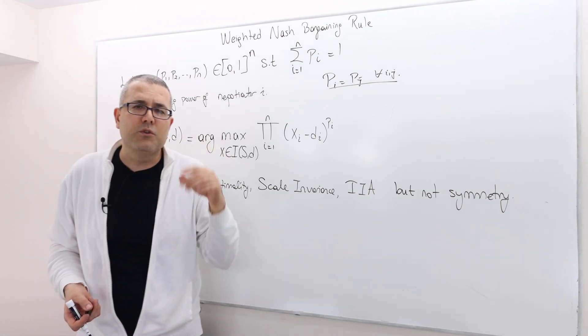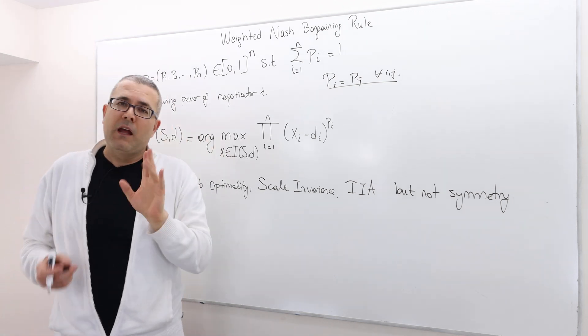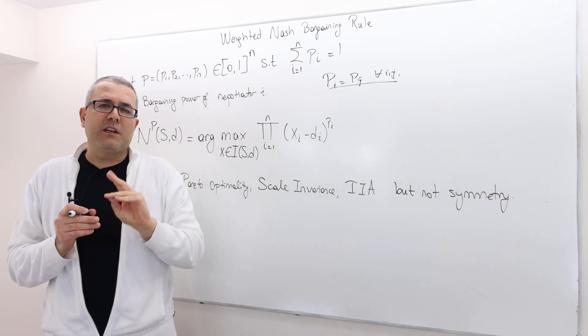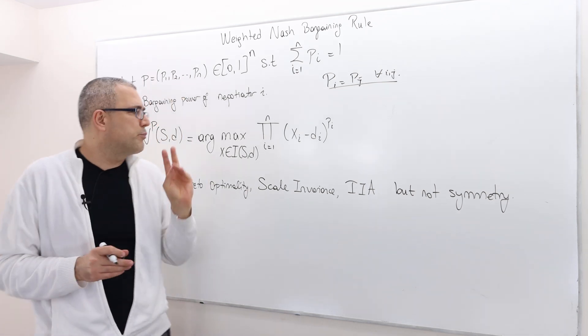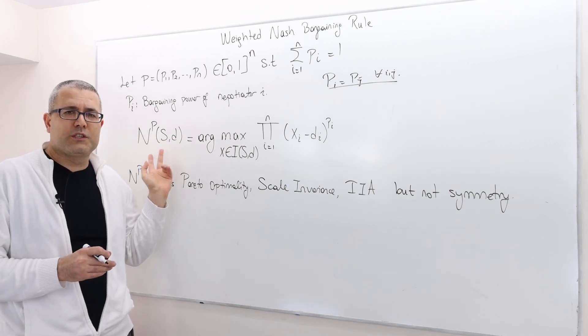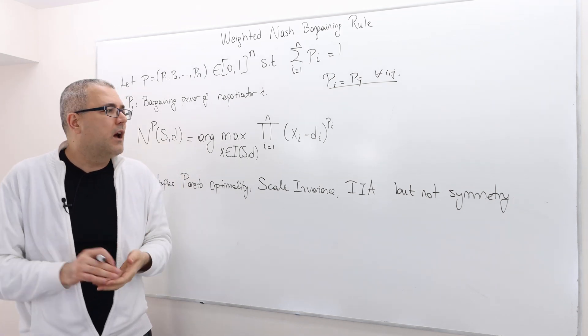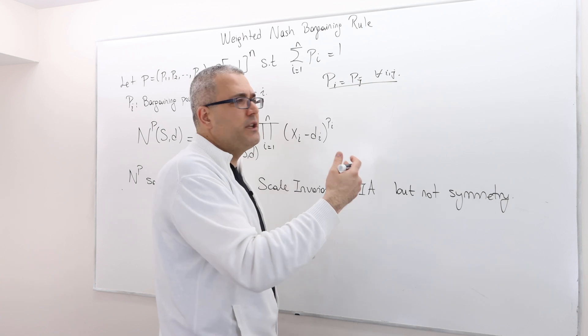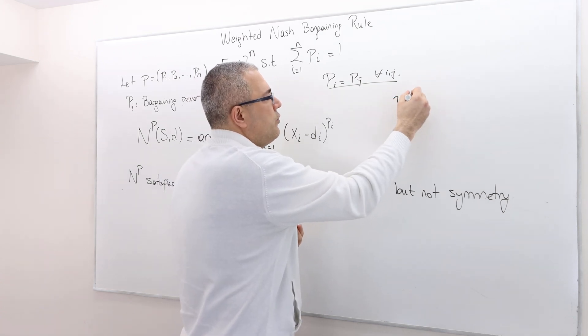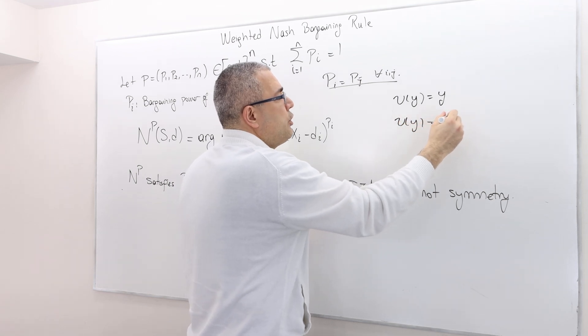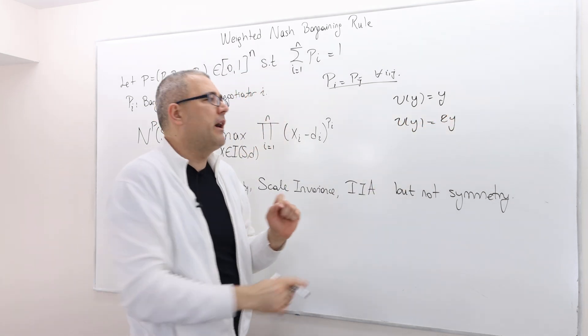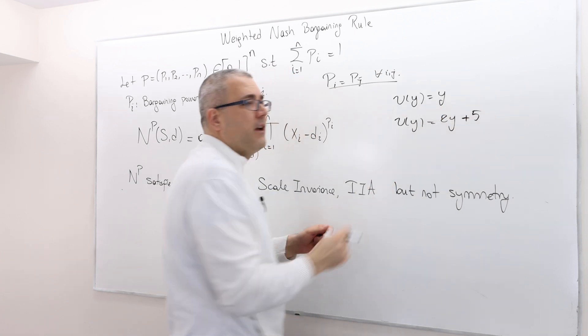So it really doesn't matter whether the utilities of the players... So don't forget, whether players are risk-neutral or risk-averse, it will change the prediction or the outcome or the solution. However, when we say the agents are risk-neutral, whether you write the utility U of Y is equal to Y or U of Y equals 2Y, that doesn't matter. Or 2Y plus 5. Okay.